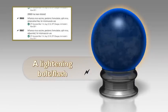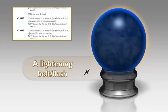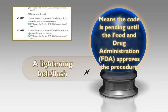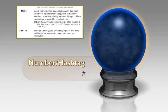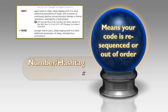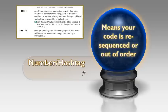The lightning bolt symbol means the code is pending until the Food and Drug Administration approves the procedure — there are only about seven such codes in the entire CPT manual. The hashtag or number sign means a code is resequenced or out of order. For example, 95782 is out of order because the preceding code is 95811.